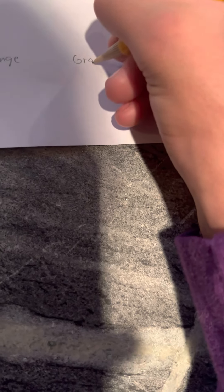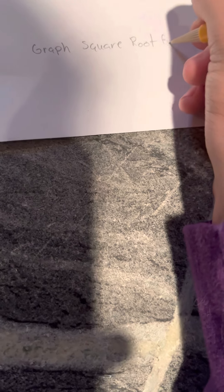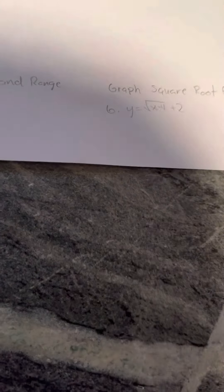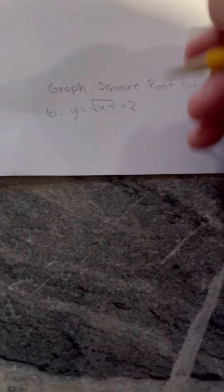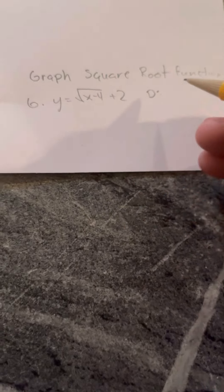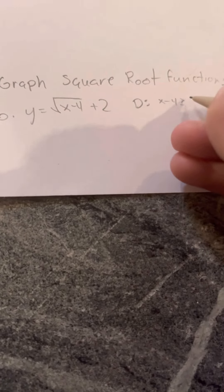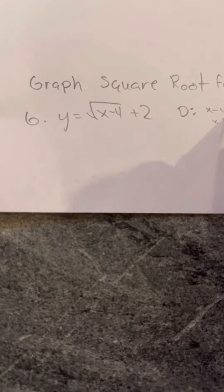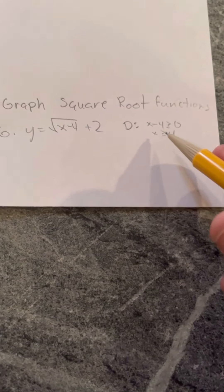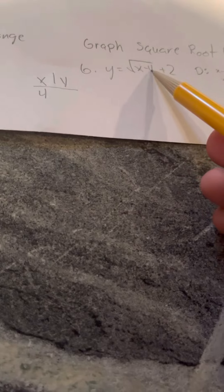Graph square root functions. Problem number 6: y equals the square root of (x minus 4) plus 2. We need to define the domain first. Set x minus 4 greater than or equal to 0, then add 4 to both sides: x is greater than or equal to 4. So the domain starts at x equals 4. When x equals 4: 4 minus 4 is 0, plus 2 is 2, so y equals 2.